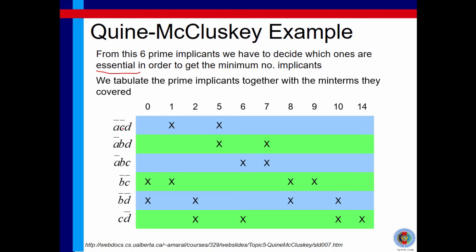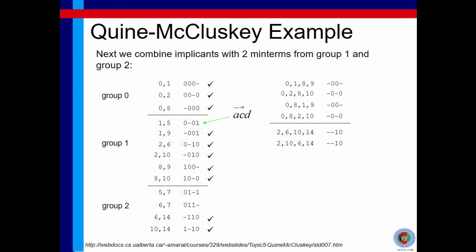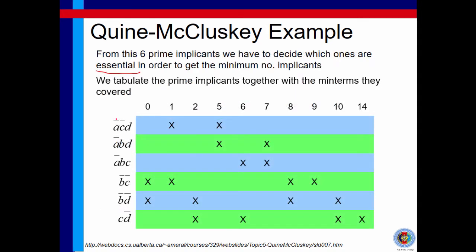For example, A̅C̅D is made of minterms 1 and 5. How do we know that? We have to recall our previous steps — referring to this table, it is minterms 1 and 5. We do the same for the other prime implicants. This one is 5 and 7. A̅BC is 6 and 7, and so on.